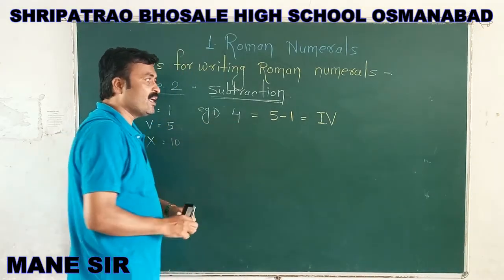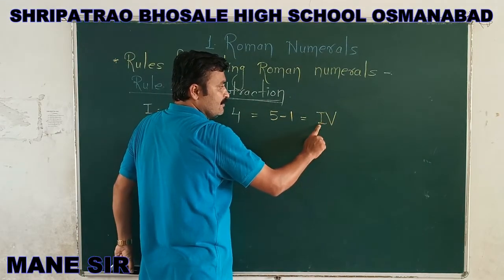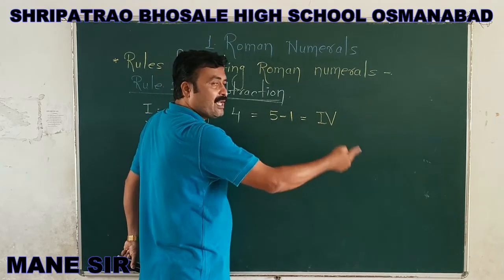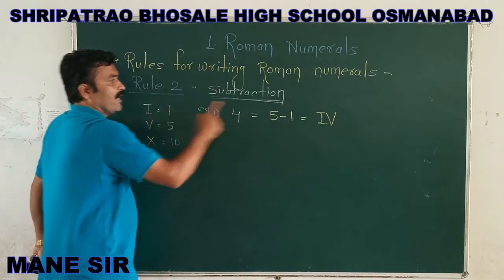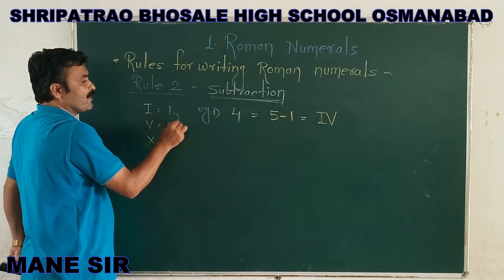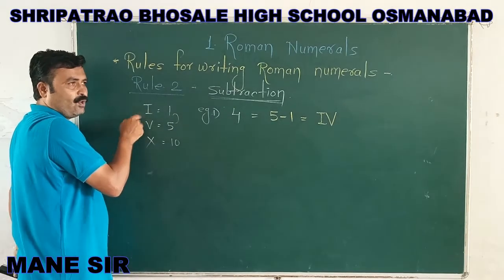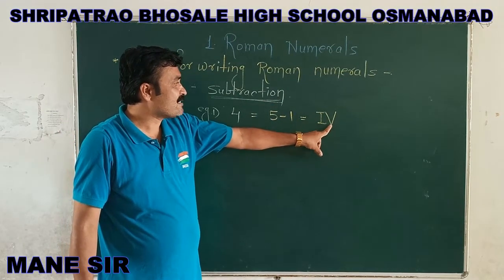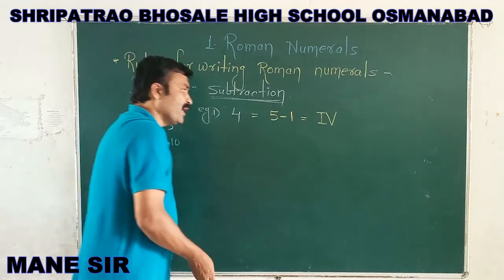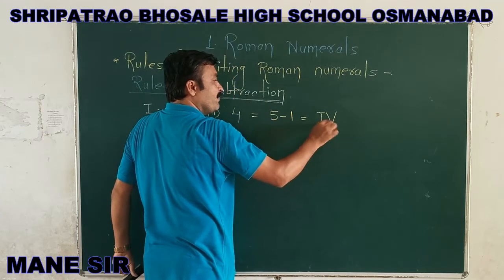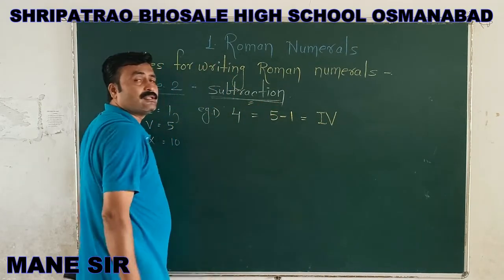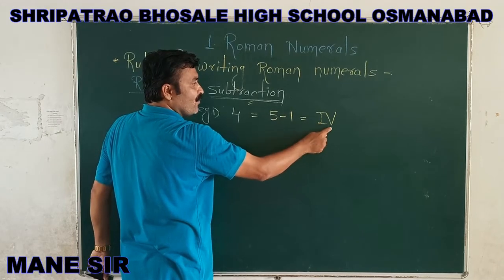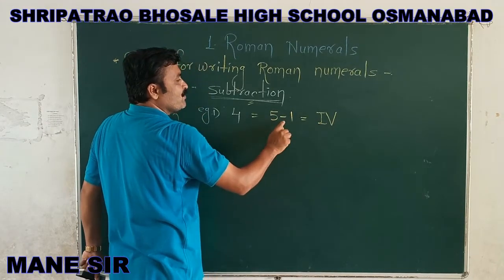Now, if you compare I and V — these two basic signs — capital I has a smaller value and V has a bigger value. Capital I means 1 and V means 5. So if you compare these two values, V is bigger and I is smaller. If you observe, the smaller Roman numeral is written before the bigger numeral. When we write a smaller Roman numeral before a bigger numeral, it always shows the subtraction process. So in this case, we subtract capital I (which means 1) from V (which means 5), and we get the Roman numeral for 4.